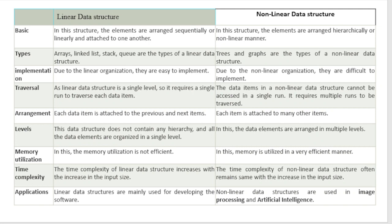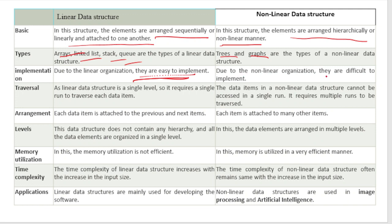Now let's see the differences between linear and non-linear data structures. In terms of basic arrangement: in linear, elements are arranged sequentially or linearly; in non-linear, elements are arranged hierarchically. Types: linear includes arrays, linked list, stack, and queue; non-linear includes graph and tree. Implementation: linear is easy to implement due to linear organization; non-linear is difficult to implement. Traversal: linear data structure is a single level so a single run is needed; non-linear requires multiple runs.